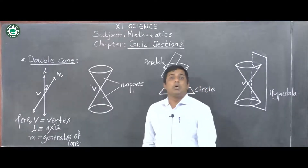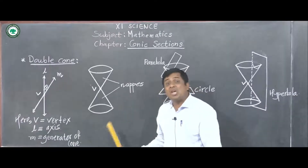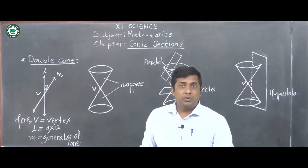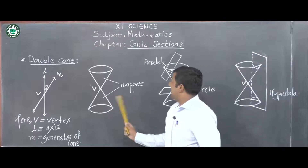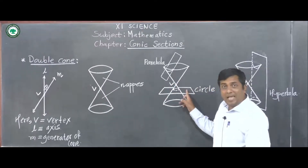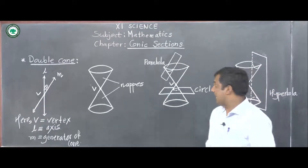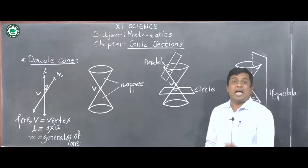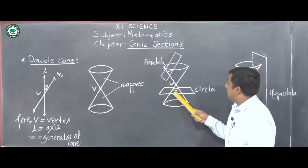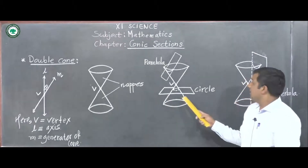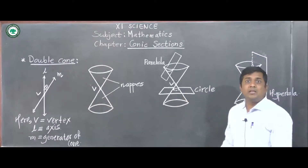Using this cone we define conic sections by considering sections cut by a plane. If the plane is perpendicular to the axis and does not contain the vertex, then the intersection with the cone is a circle.